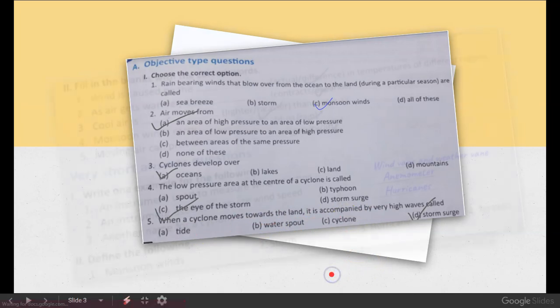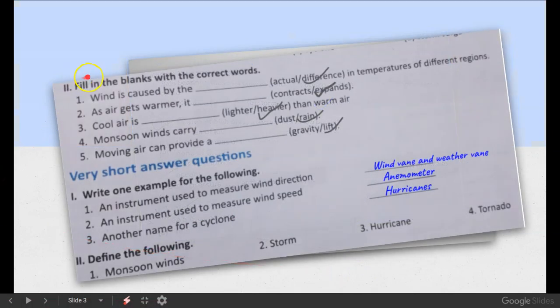So let's go to the next slide. We are going to fill in the blanks with the correct words. Question number first. Wind is caused by the actual difference in the temperature of different regions. Moving air is called wind. Wind that blows is because of the difference in temperature of different regions. And this line is the actual definition of wind, so you have to remember this line. And this question's answer is difference.